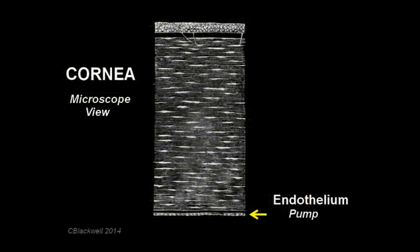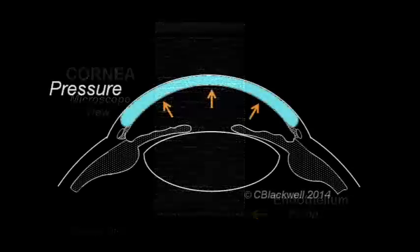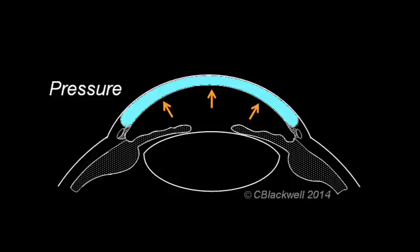Beneath the stroma is the innermost layer of the cornea, the endothelium. Though it is only one cell layer thick, it is nevertheless quite important. Your eyeball has a certain amount of internal pressure that keeps it inflated and functioning properly. That inflation pressure pushes the watery fluid in the front chamber of the eye into the cornea.